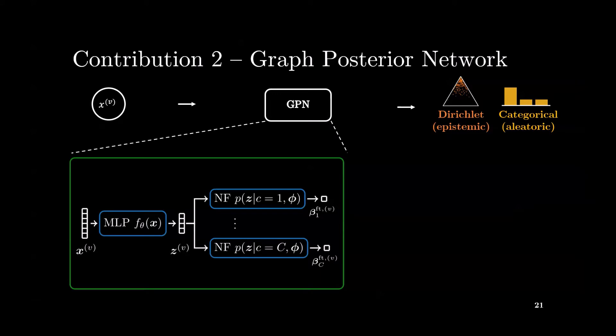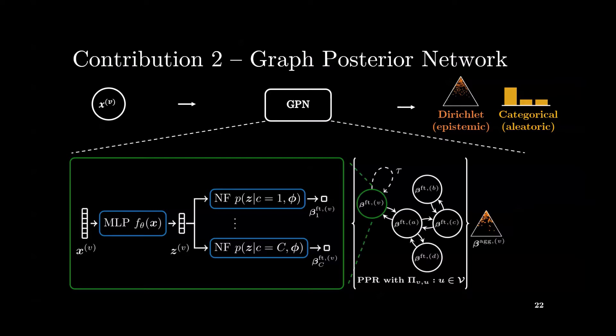A combination of node-level encoder and density estimation step transforms the node features into feature-level pseudocounts. Given the pseudocounts of a node's neighborhood, we diffuse those using a propagation scheme based on personalized page rank, which finally forms aggregated pseudocounts for each node. The input-dependent Bayesian update then combines the aggregated pseudocounts by presenting the likelihood term with the uniform Dirichlet prior. This results in a posterior Dirichlet distribution containing the desired uncertainty estimates.